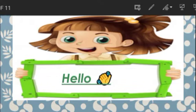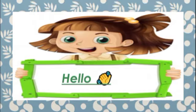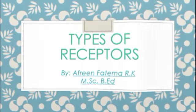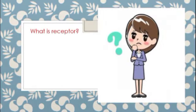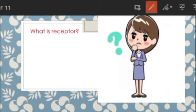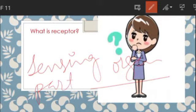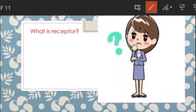Hello my dear students, welcome to another video lecture of our Comparative Anatomy of Vertebrates paper. In this video lecture, we are going to talk about the types of receptors. The first question is: what is a receptor? A receptor is any type of sensing organ, or a part of a sensing organ. In short, receptors are responsible for stimulation.